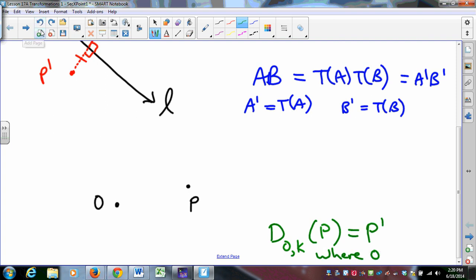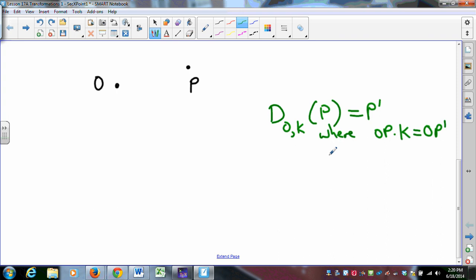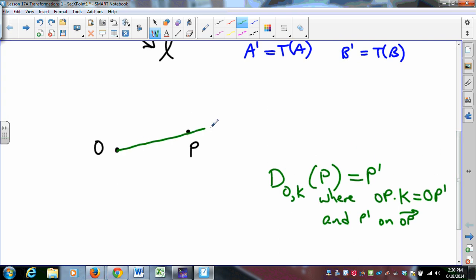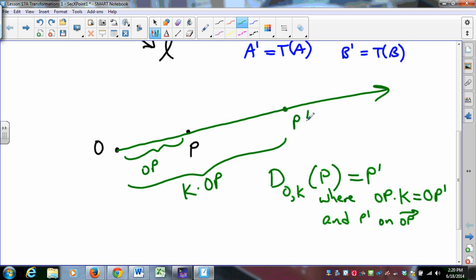So when I perform a dilation of center O and factor K, that's just P prime, where the distance from O to P, if I take the distance OP and I multiply by K, I get the distance to P prime, and P prime is on ray OP. So I draw ray OP, this is some distance, I multiply that distance by K, ruler postulate says I stick P prime right there.